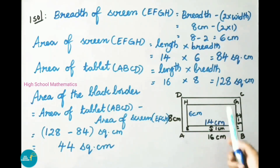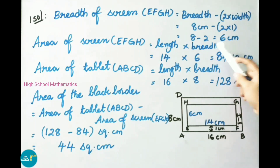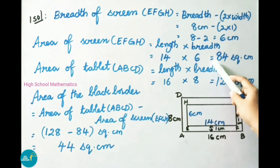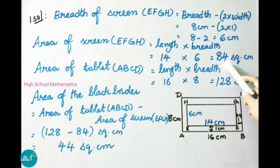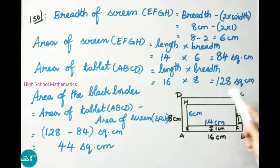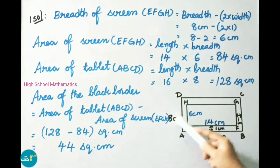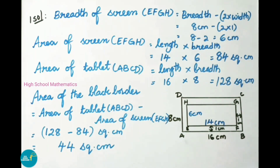Area of screen EFGH: it is in the shape of a rectangle, so the formula is length into breadth, which equals 14 into 6, giving 84 square centimeter. Next, area of tablet ABCD is also a rectangle, so length into breadth equals 16 into 8, which is 128 square centimeter.